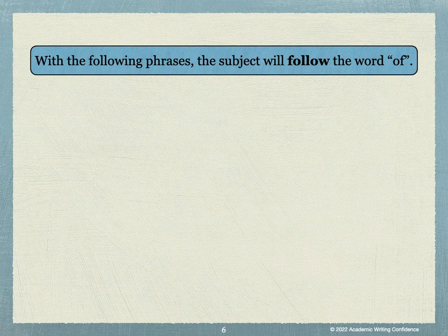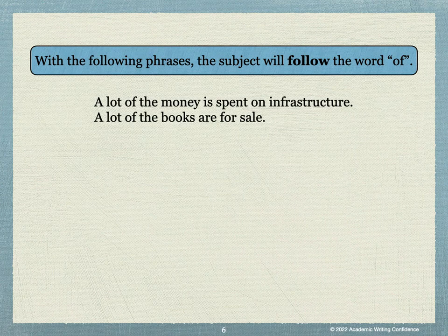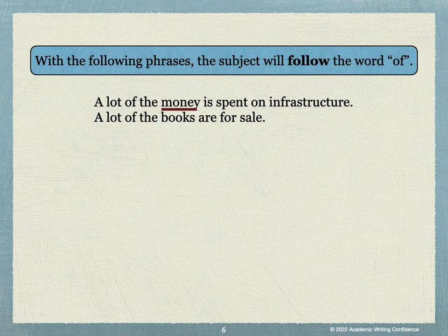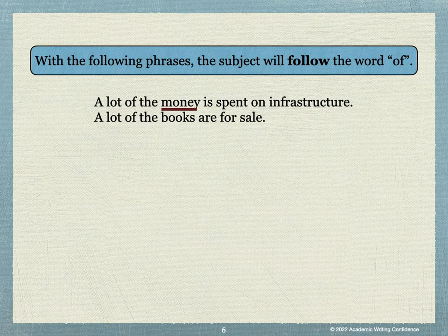With the following phrases, the subject will follow the word of. For the phrase a lot of: A lot of the money is spent on infrastructure. A lot of the books are for sale. We need to look at the words after the phrase to find the subject. In the first sentence, the word money comes after a lot of. Money is an uncountable noun — something that cannot be counted — and is considered to be a singular noun. So the subject-verb agreement is the money is spent.